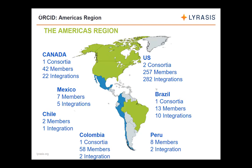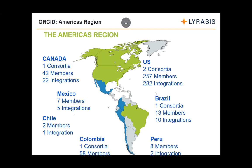In the Americas region, which is one of the biggest, we've recently launched the Colombian consortium, which currently has 58 members — mostly universities — and they are all planning integrations in different systems. There is another consortium in Brazil and another one in Canada, and we are working towards a consortium in Peru as well. We have seven members in Mexico and two in Chile. Notably, the National Bank of Mexico is planning to integrate with ORCID as well.